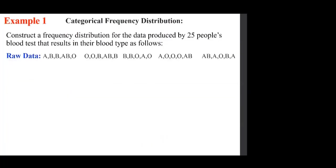Let's look at a simple example. We want to construct a frequency distribution. When raw data is collected we just make a note of the data — this refers to some sort of plot type. For example, A, B, B means the first person's plot type is A, the next is B, then B again, and so on. As you can see, it's raw data and may not be that useful.